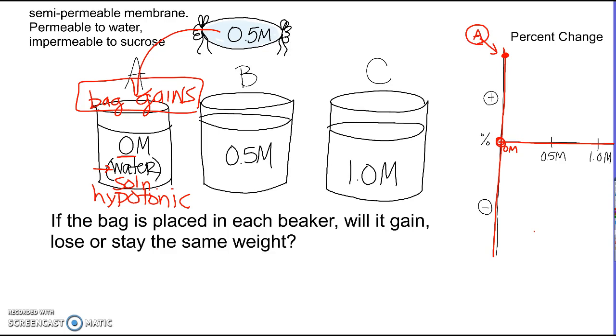With me so far? Let's say I now put the bag, a similar bag, same solution, into solution B. What should I expect to happen if I put this bag into solution B that's 0.5 molar? Awesome. It should stay the same. Because what kind of solution is this? Right. It would be equilibrium and an isotonic solution. So water would tend to go in and out at the same rate. And we could assume that in the 0.5 molar, we should get pretty much no change. The bag would stay the same.